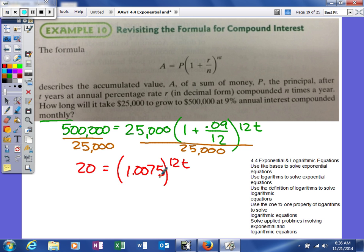Now we're going to get rid of this base, so we're going to take the log of that same base of both sides. I'll take the log base 1.0075 of both sides. This will cancel and leave me 12T. Over here we're going to have log base 1.0075 of 20.